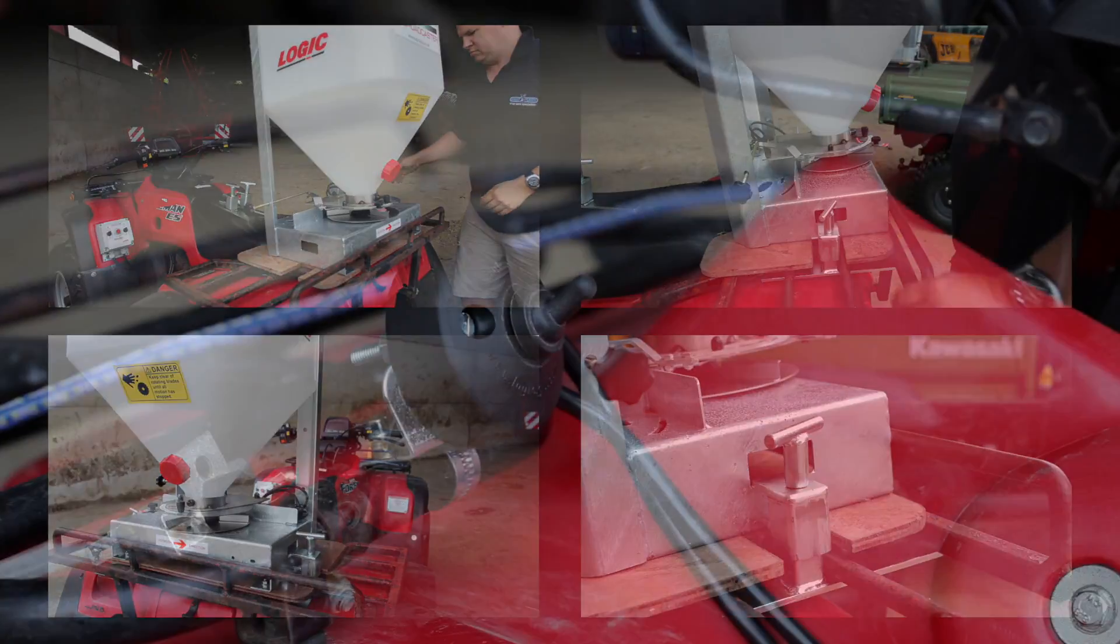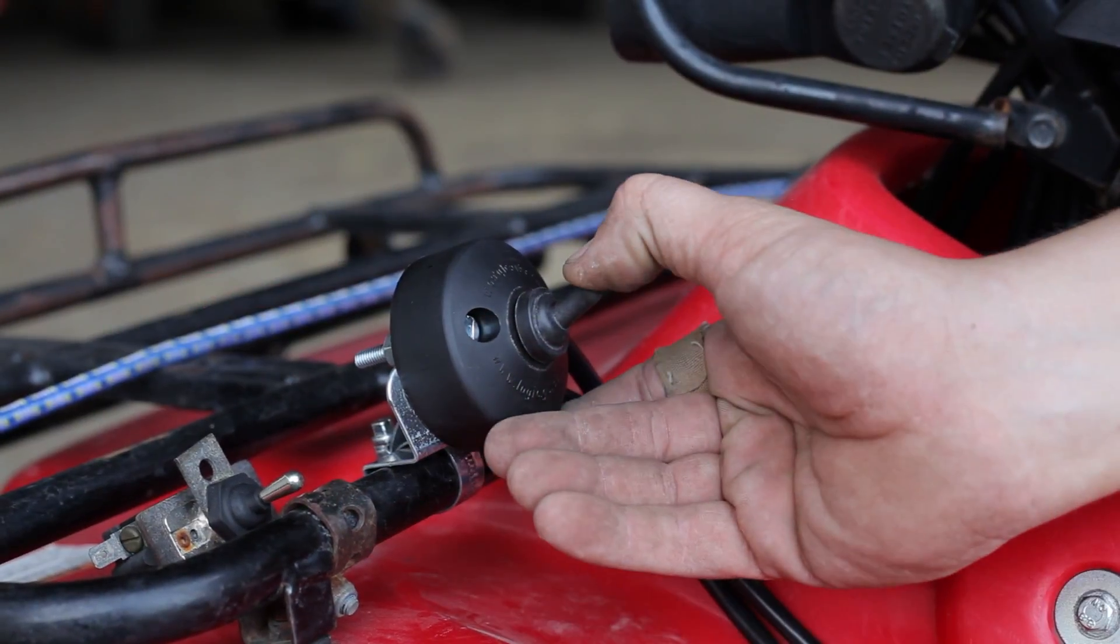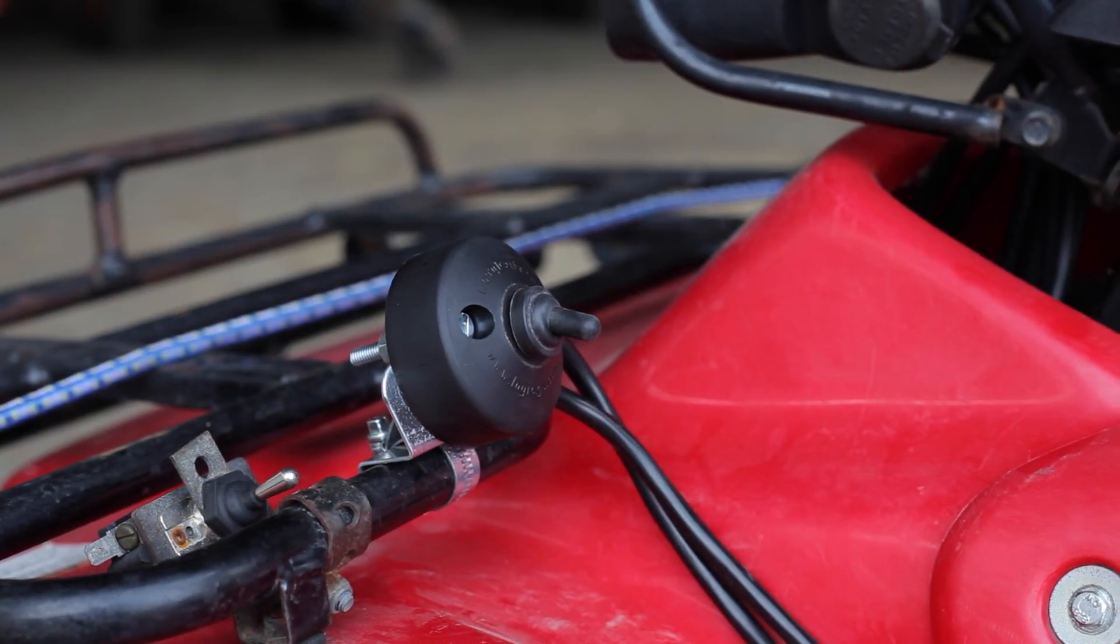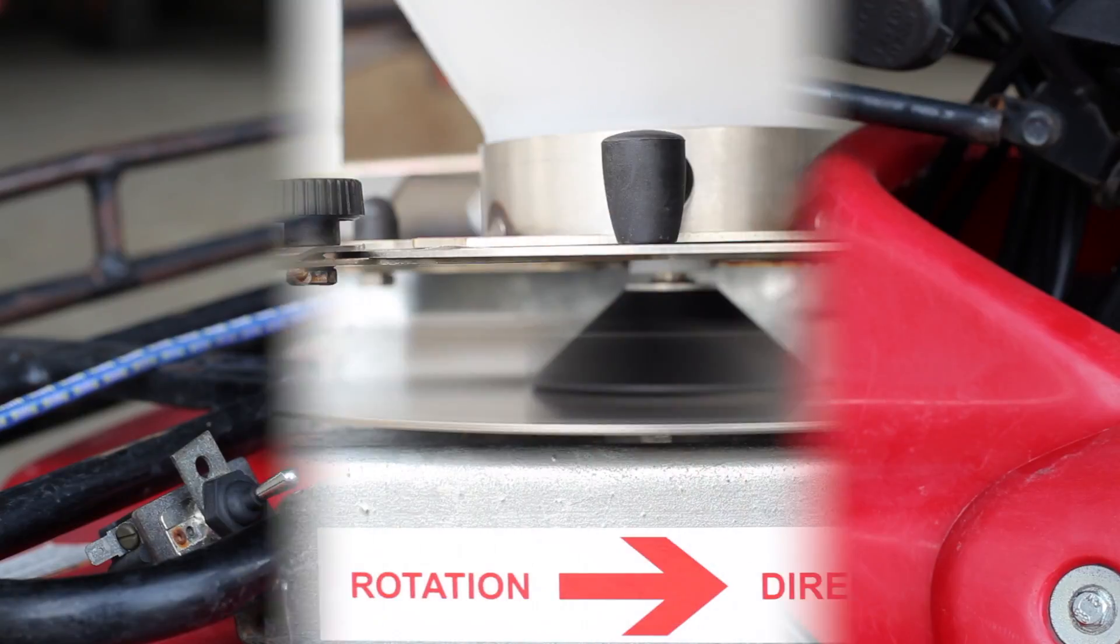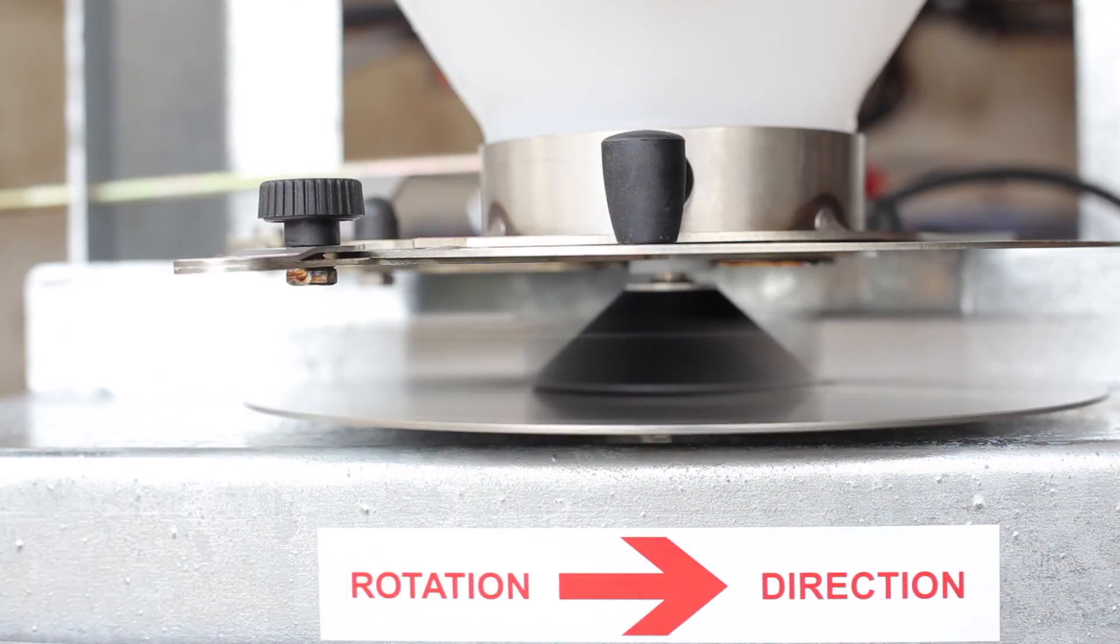The 12 volt electric power is supplied by the optional Logic AE500 wiring harness, which incorporates an on-off switch. This can be mounted onto the ATV handlebars.